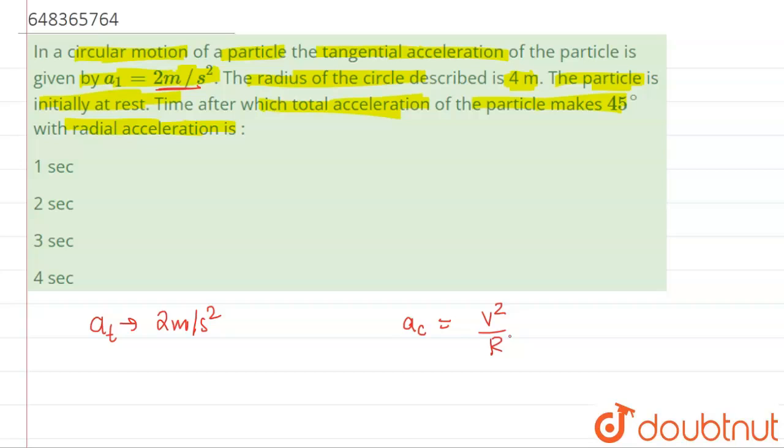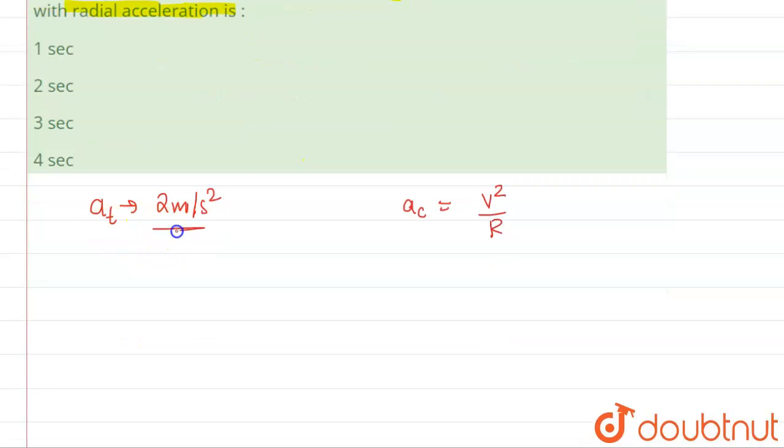Initially the particle was at rest. What you have to find is when does the particle's velocity or v square by r become equal to at. Because for angle of 45 degree, at must be equal to ac.